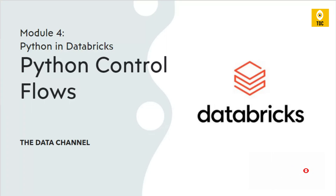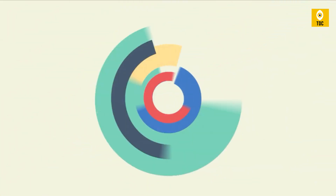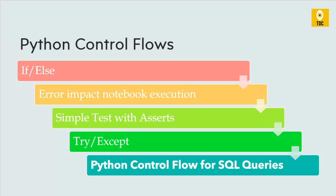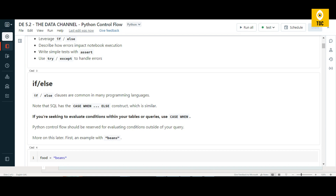Let's get started. The basic Python control flows we'll cover today are: the if-else condition, how errors impact notebook execution in Databricks cells, how a failed cell containing Python code affects the notebook, a simple test with the assert statement, the try-catch (try-except) block, and finally Python control flows for SQL queries.